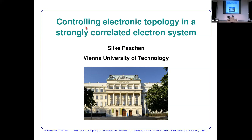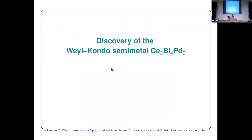I'll be talking about controlling electronic topology in strongly correlated electron systems. The focus is on the controlling. Before showing how we can control it, let me introduce what we mean by electronic topology in a strongly correlated electron system. It is about a Weyl-Kondo semimetal in a specific material, Ce₃Bi₄Pd₃, and I have to show the evidence first before showing how to tune it.